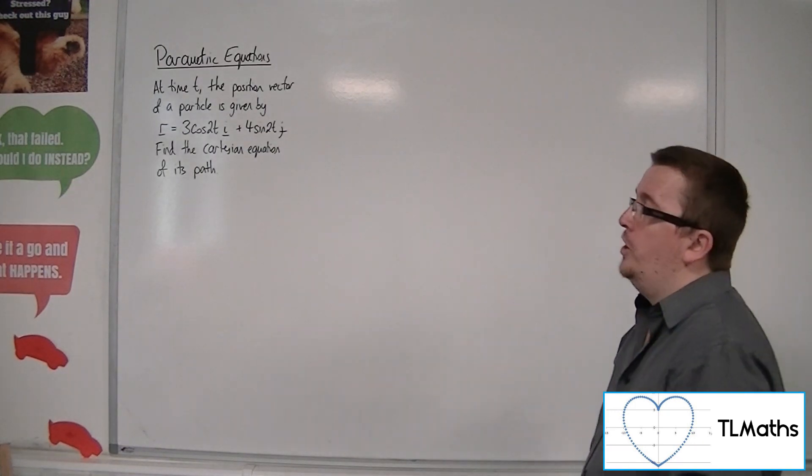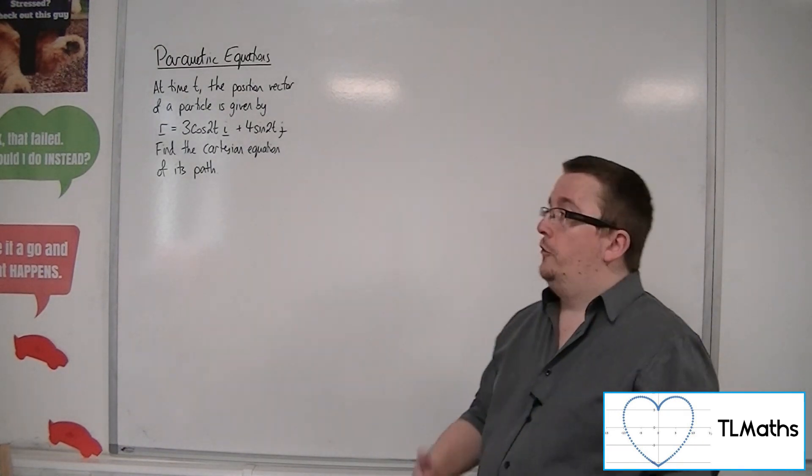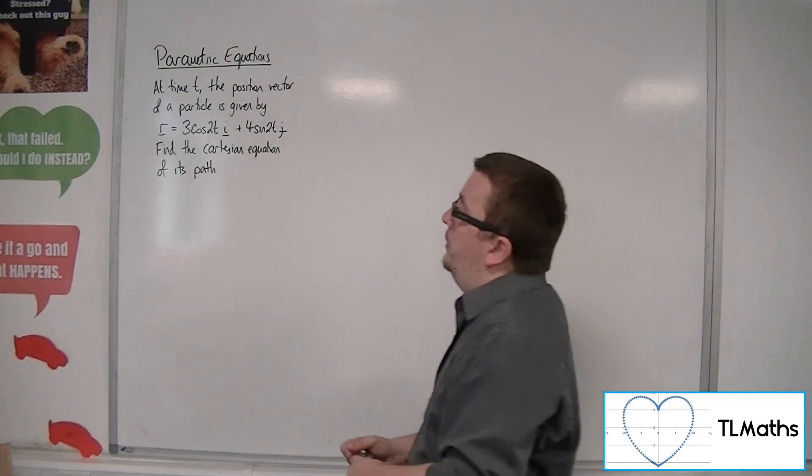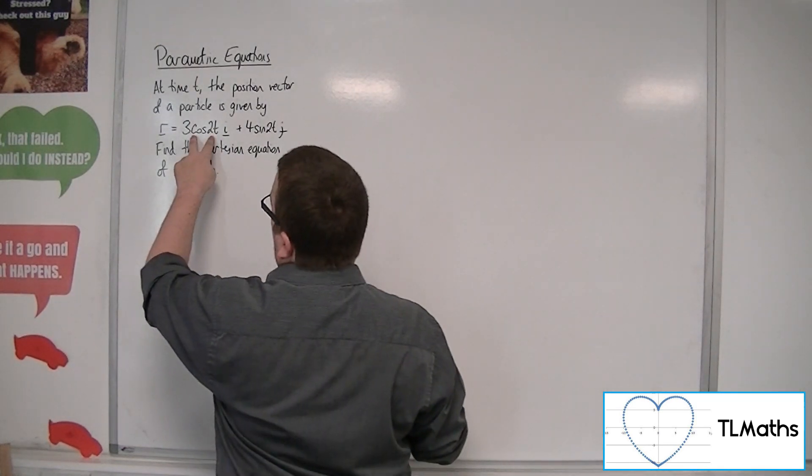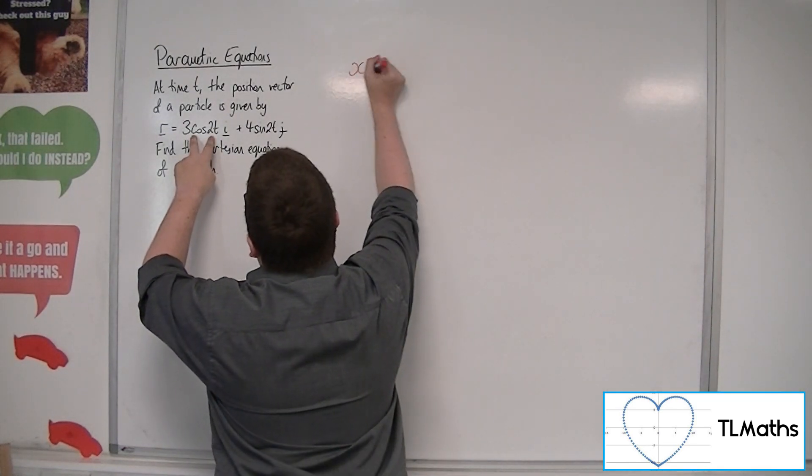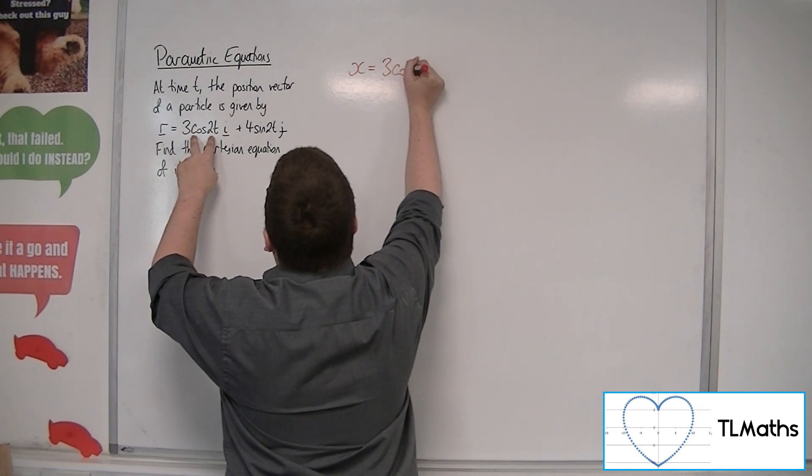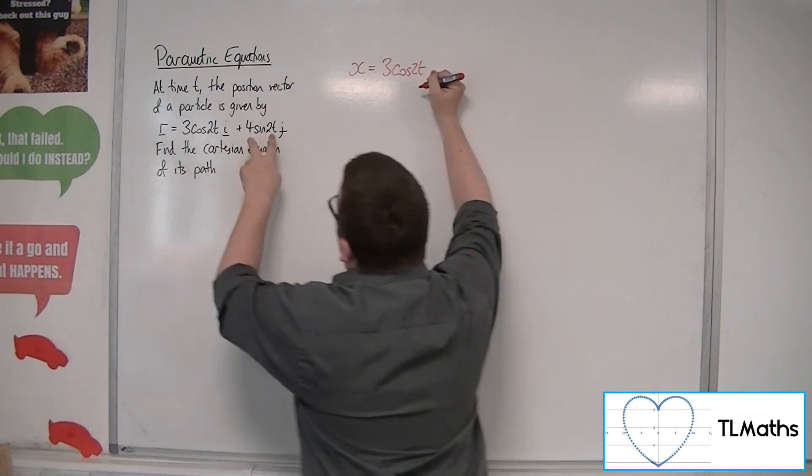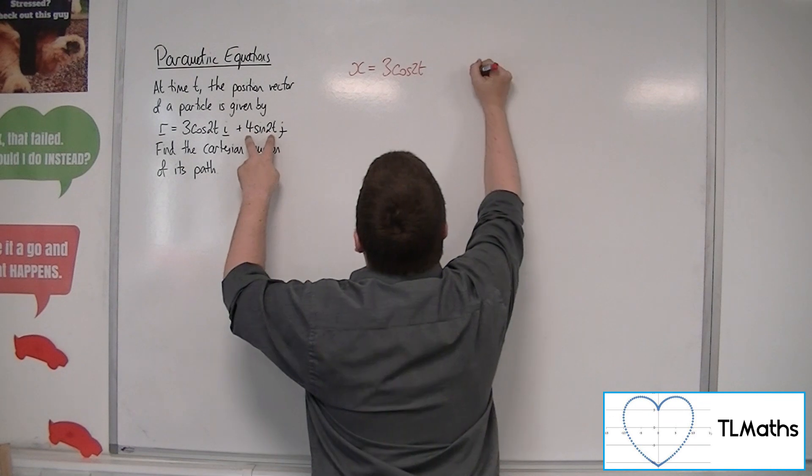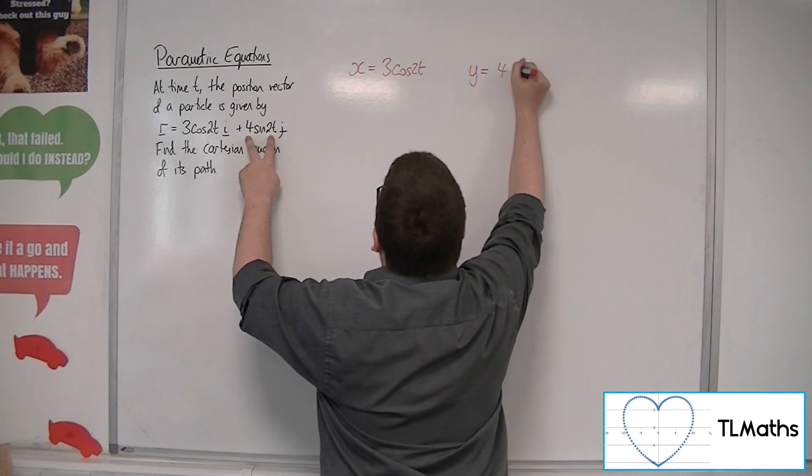Find the Cartesian equation of its path. So because it's got this horizontal component, 3 cos 2t, we can let x be the 3 cos 2t. And the y can be the vertical component, 4 sine 2t.